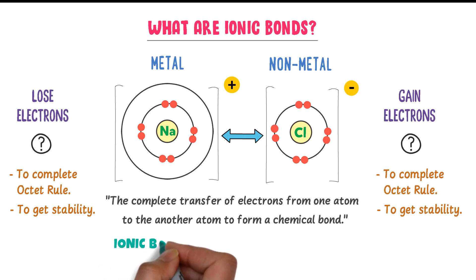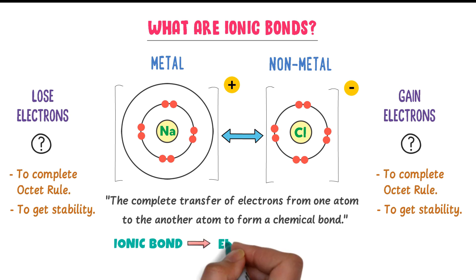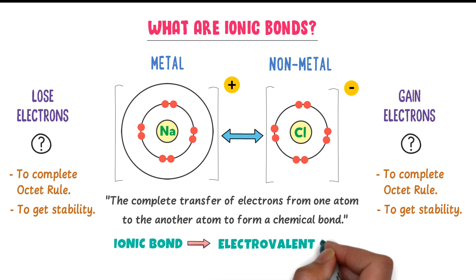Remember that an ionic bond is also called an electrovalent bond. Also remember that an ionic bond is always formed between metals and non-metals. Note down all these important points.